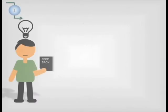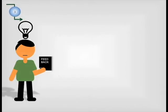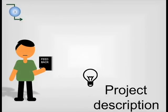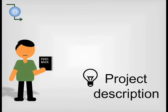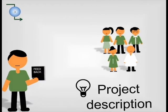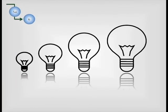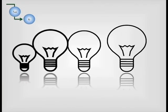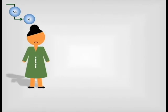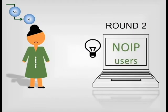With this critical feedback in hand, the idea can be developed further into a project description including its budget and partners, and submitted with Template 2, the next step in the process. Depending on the readiness level of the project, it can either be presented by technical area and sub-area leaders for a second round to NOIP users.